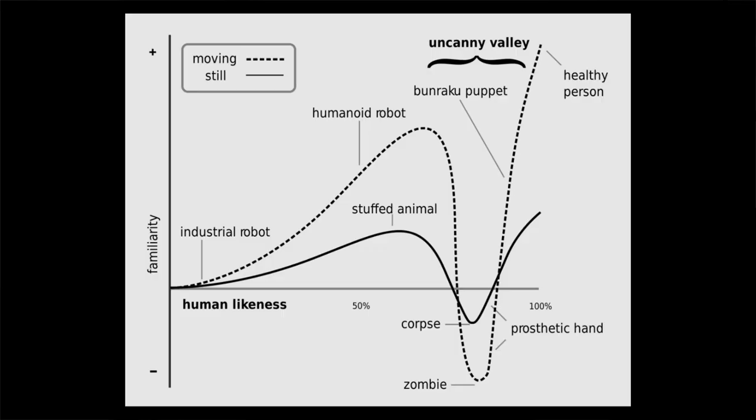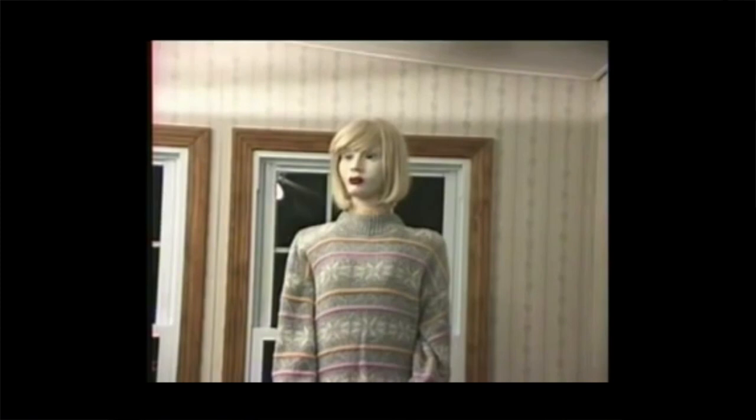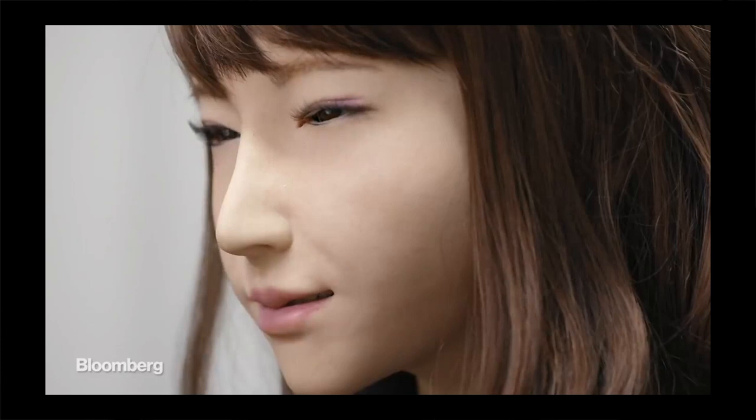Examples like prosthetic limbs, humanoid robots, and even zombies and corpses are used in the graph describing this phenomenon. As things get more and more human-like, we start to feel more familiar with the object until it reaches a certain point. Right before it becomes indistinguishable from human beings, our positive emotions toward the object dip into a valley of uncomfortable feelings. And this is what the uncanny valley is.